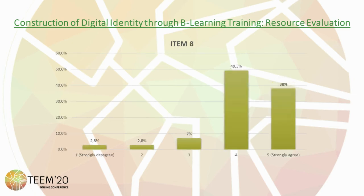The next item rates whether technological resources support group work. 49.3% agree that they do, which is the highest percentage, followed by 38% that strongly agree and 2.8% that disagree, which is the same percentage recorded by those that strongly disagree.